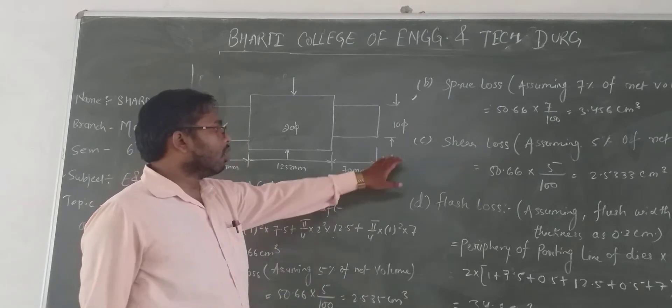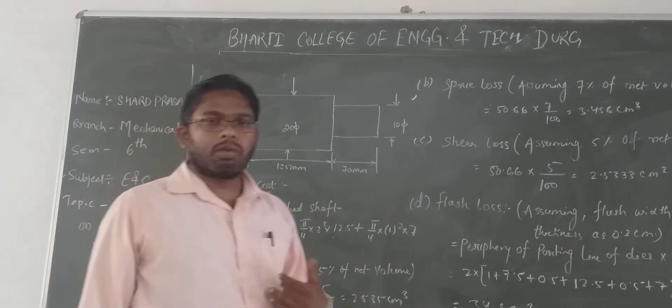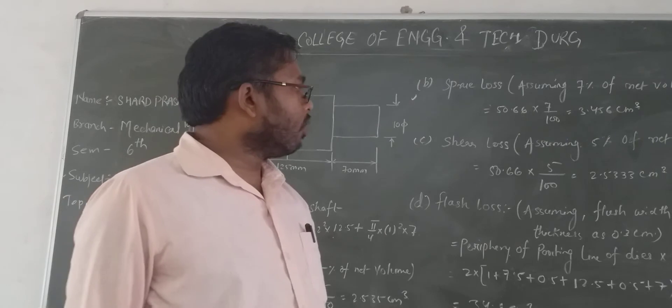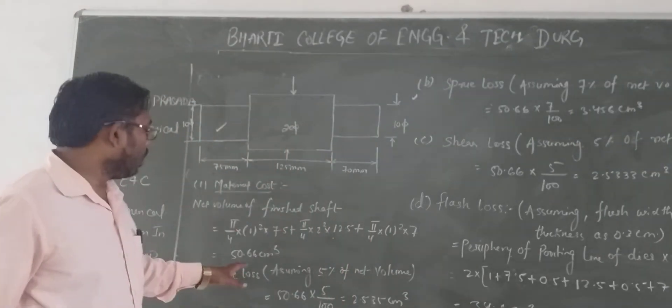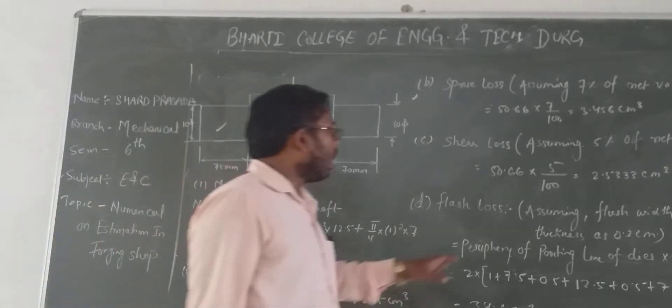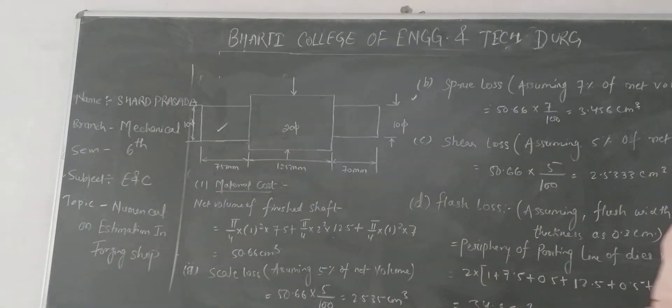Now shear loss. Shear loss is 5% of net volume. 50.66 × 5 divided by 100 equals 2.533 cm³.